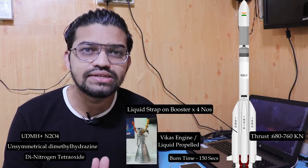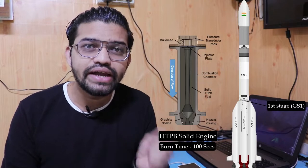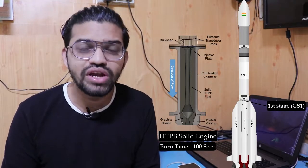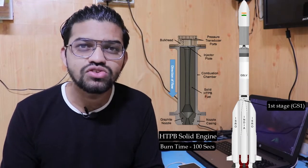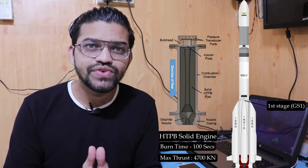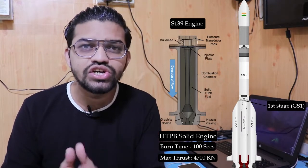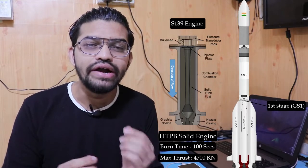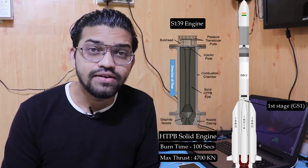The first stage is known as GS1. It uses HTPB solid propellant with a burn time of 100 seconds, and is ignited four to five seconds after the strap-on liquid boosters. HTPB stands for Hydroxyl Terminated Polybutadiene, which produces a maximum thrust of 4700 kilonewtons. This stage uses the S139 engine with 139 tons of HTPB. After 100 seconds, the strap-on boosters continue to burn for the remaining 45 seconds, providing required thrust to the GSLV.